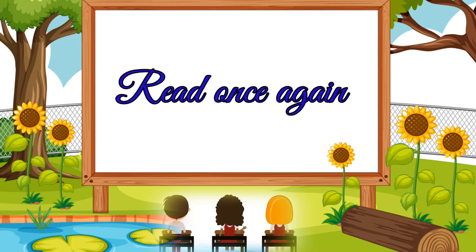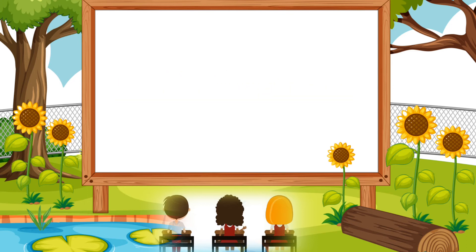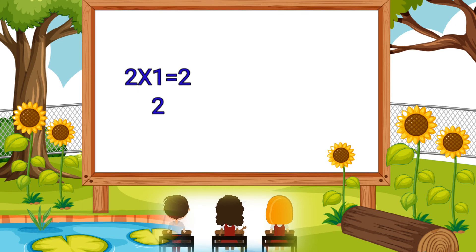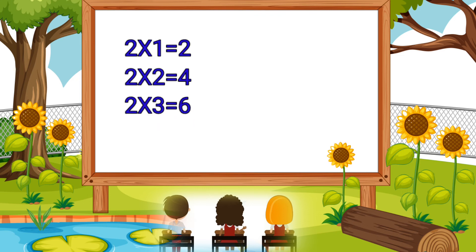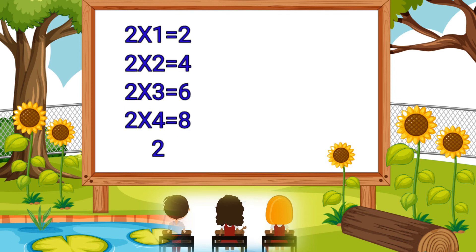Read once again. Two ones are two. Two twos are four. Two threes are six. Two fours are eight. Two fives are ten.